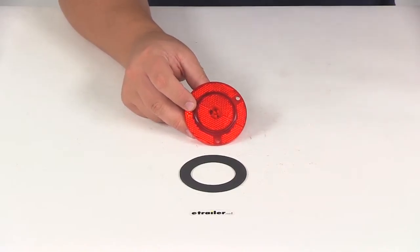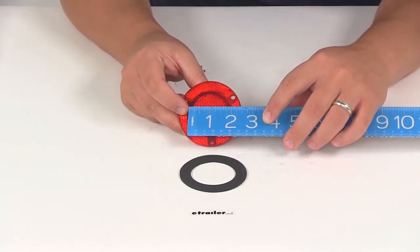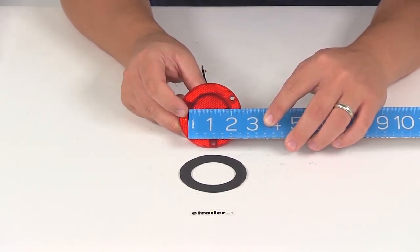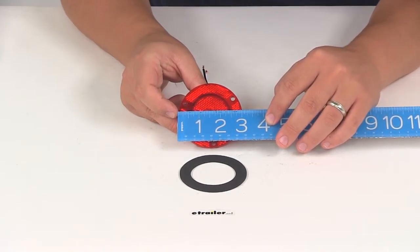Taking a few measurements, starting with the diameter of just the light—that measures about two inches. Overall diameter from outer edge to outer edge is about three and one-sixteenth inches.